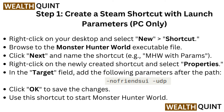Step 1: Create a Steam shortcut with launch parameters — PC only. Right click on your desktop and select New, then Shortcut. Browse to the Monster Hunter World executable file. Click Next and name the shortcut, for example, MHW with params. Right click on the newly created shortcut and select Properties. In the target field, add the following parameters after the path.